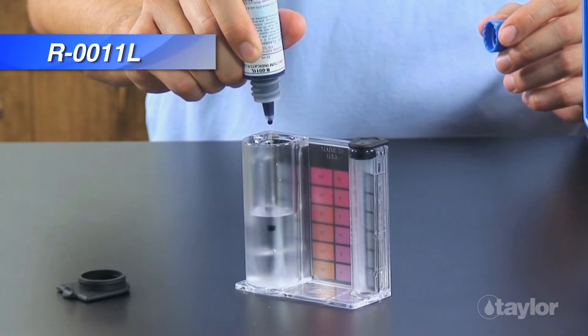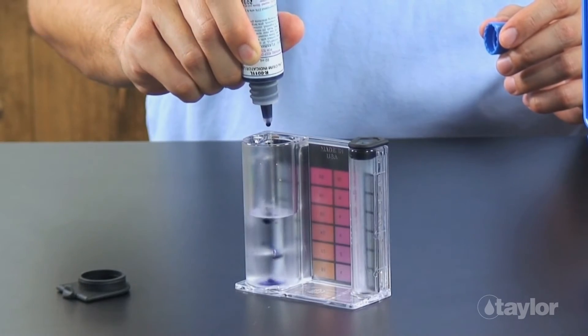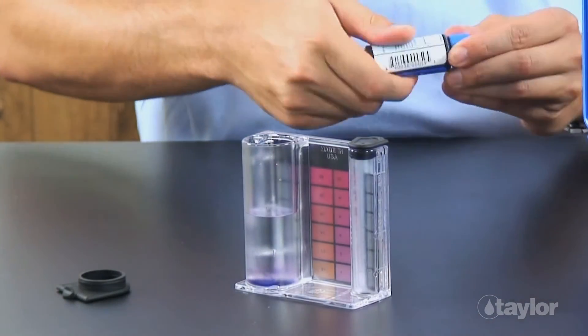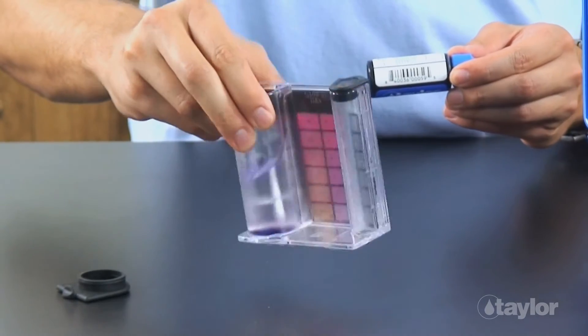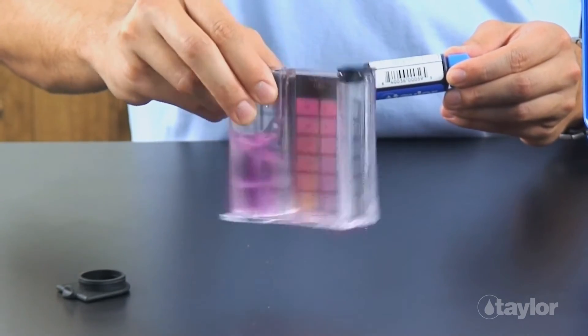Add 5 drops of reagent 11L. Swirl to mix. If calcium hardness is present, the sample will turn red.